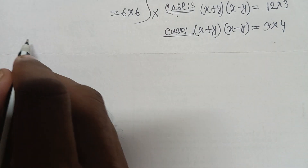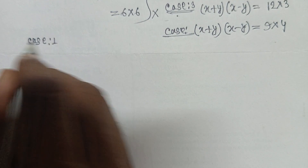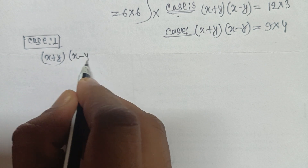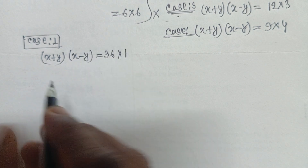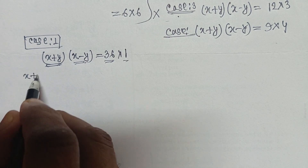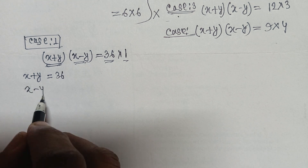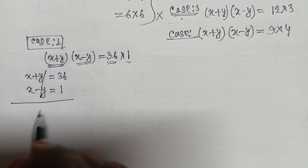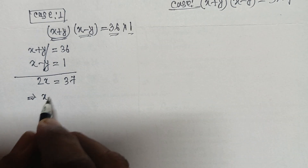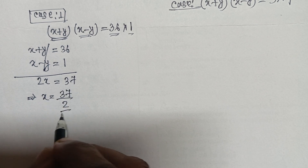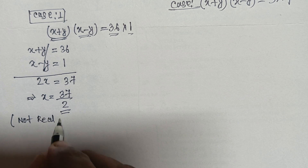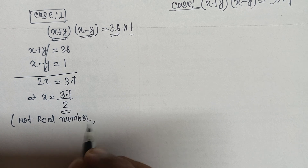For Case 1: x plus y equals 36 and x minus y equals 1. Adding these equations, the y terms cancel and we get 2x equals 37, so x equals 37 over 2. This is a fractional number, not a natural number, so Case 1 is rejected.